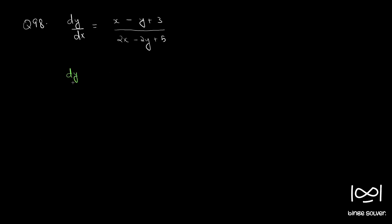So dy by dx equal to, let's write x minus y plus 3 by 2 into x minus y plus 5. And put x minus y equal to u.